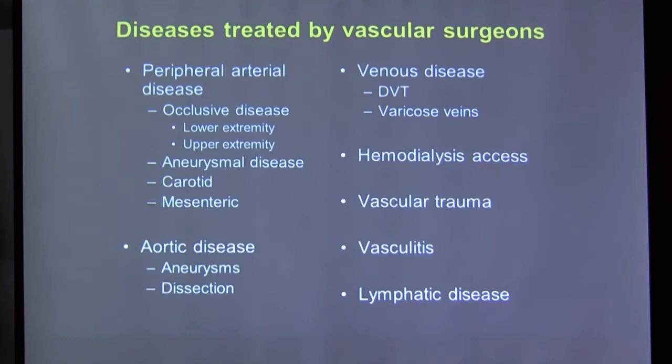On the venous side, vascular surgeons treat deep vein thrombosis (blood clots in veins), varicose veins, and hemodialysis access — such as AV fistulas or AV shunts for patients with kidney failure requiring dialysis. We also treat vascular trauma where blood vessels are injured, and lymphatic and vasculitic conditions.